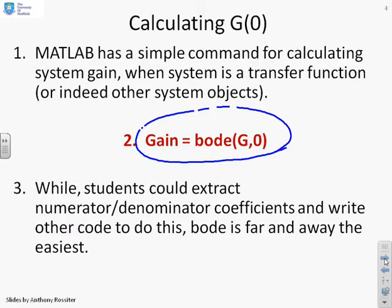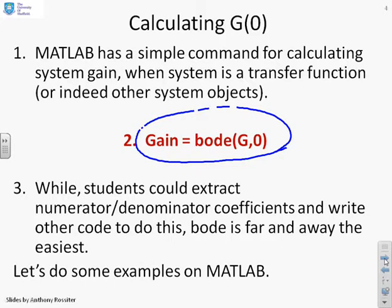Now, a note. There are other ways that you could calculate G of 0, such as extracting the numerator and denominator coefficients and finding the constants, et cetera. But that involves a lot more code. So I would recommend you use the bode command because it's the simplest.